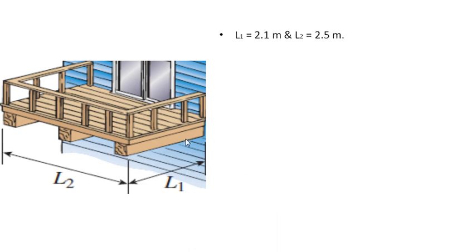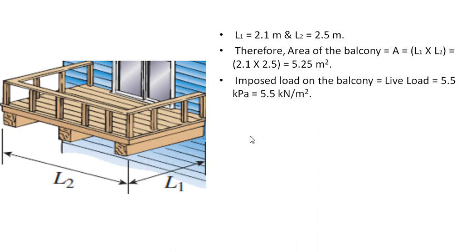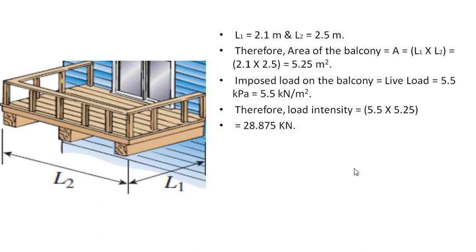We know that L1 is 2.1 meters and L2 is 2.5 meters. Therefore, the plan area of the balcony is A = L1 × L2 = 2.1 × 2.5 = 5.25 m². The imposed load on the balcony is 5.5 kN/m², so the total load intensity is 5.5 × 5.25 = 28.875 kN.